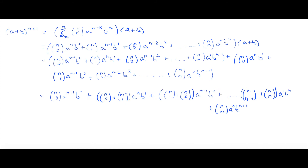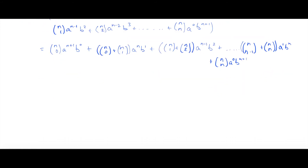Using Pascal's identity, which holds for m less than or equal to n, and states that n-choose-m plus n-choose-(m+1) equals (n+1)-choose-(m+1), we're going to apply that here. Note this is not part of the proof itself, just for reference.